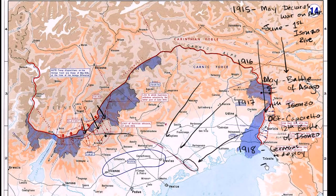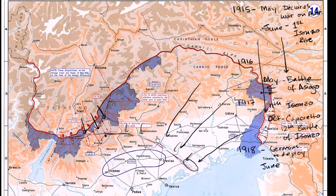In June 1918, the Austro-Hungarians attempt what they hope is their final offensive, along the Piave River. Unfortunately for them, it was poorly planned — instead of a focused point offensive like the Battle of Caporetto, it was less coordinated and spread out along the entire line.